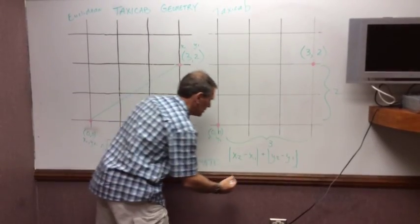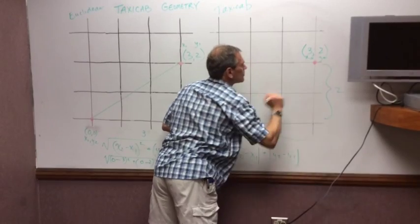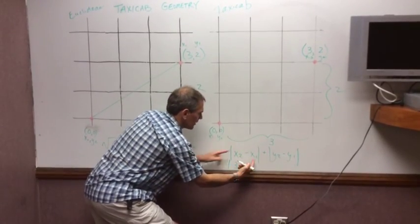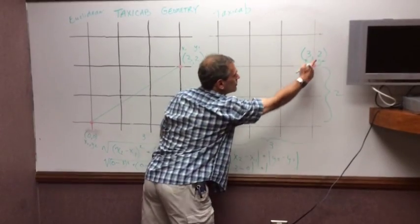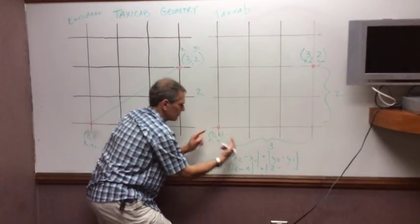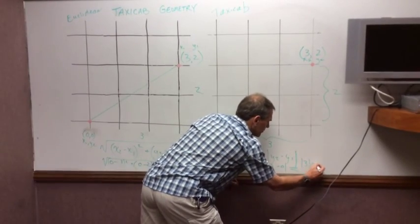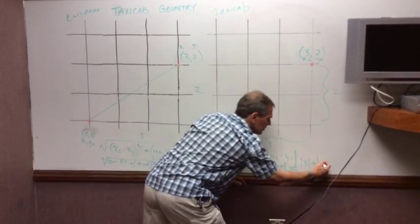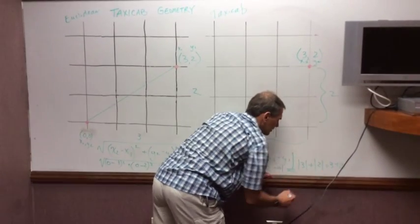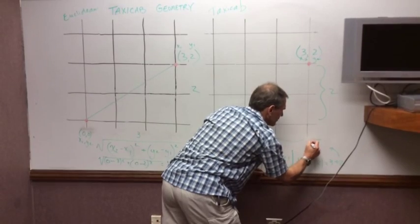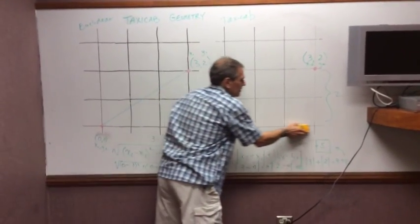Here's our formula. We've got x₂, which is 3, subtract x₁, which is 0, plus y₂, 2, subtract y₁, 0. 3 minus 0 is 3. So the absolute value of 3, plus the absolute value of 2 minus 0 is 2. 3 plus 2 equals 5. So there's the distance between this point and this point if you're driving a Taxi Cab.